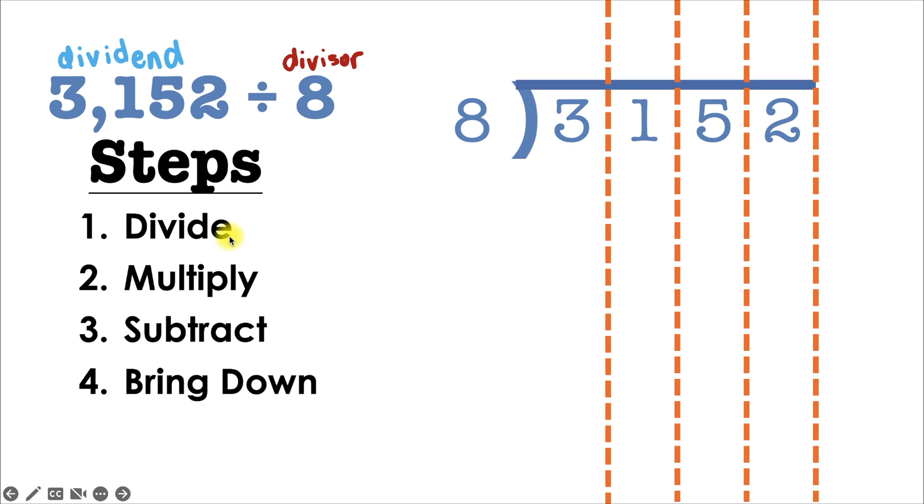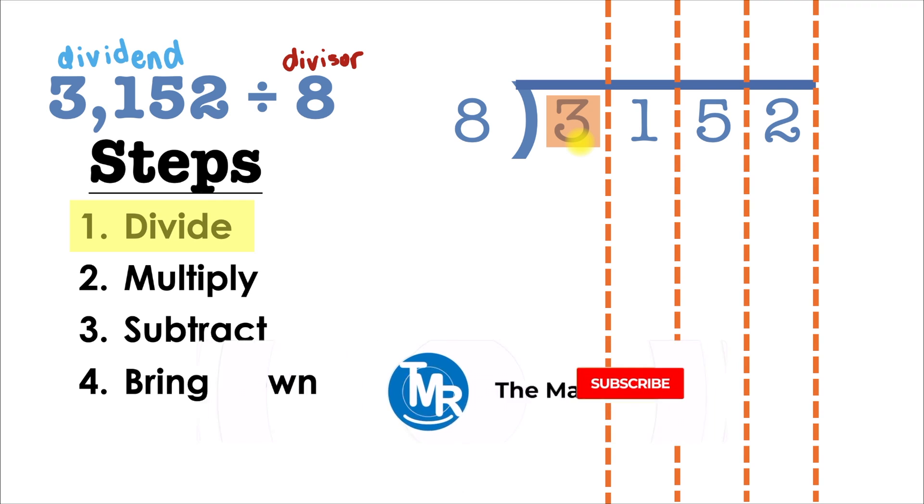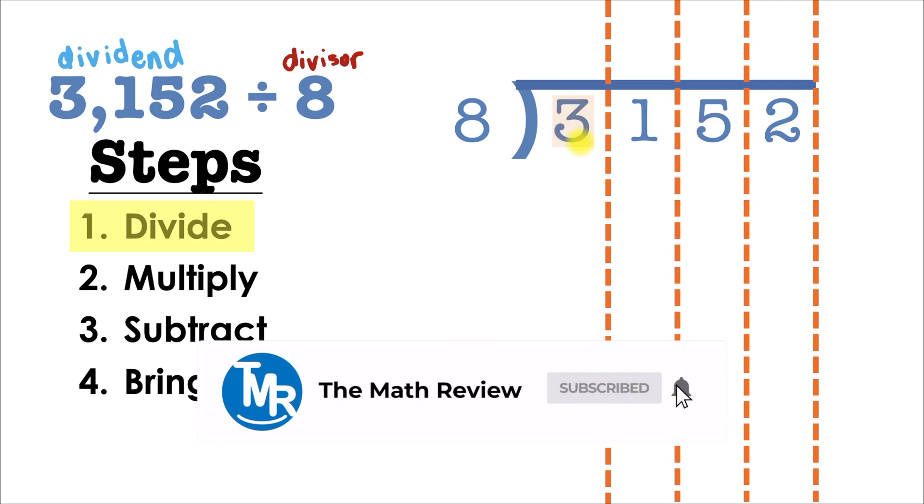Step number one, we're going to divide. Well, what exactly are we going to try to divide? We always start at the front of our dividend. Can 8 go into 3? Well, no, it can't.